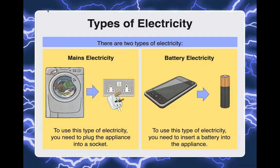There are two types of electricity: mains electricity and battery electricity. Mains electricity is where you plug the appliance into a socket — think of anything that has a charger or outlet requiring electricity from the socket. Battery electricity is where you insert a battery into the appliance, such as a cell phone or a remote control — anything that requires a battery or has a battery integrated in it.